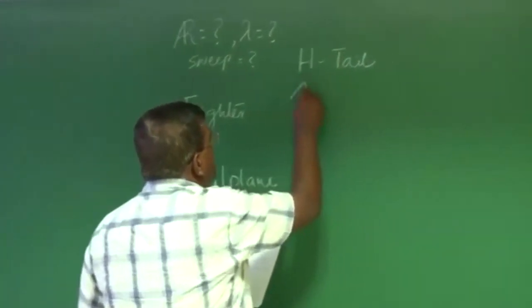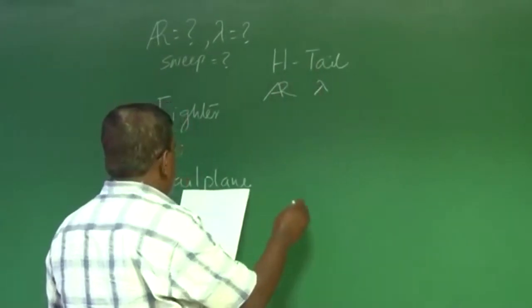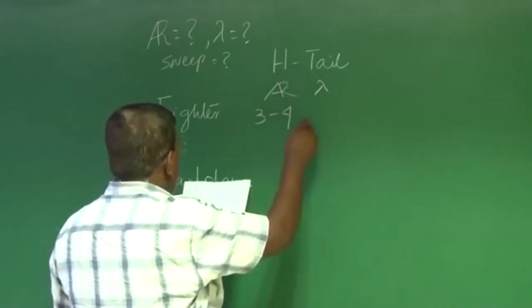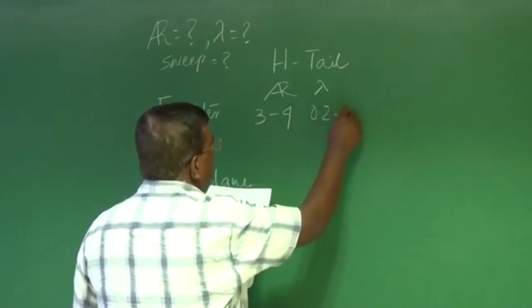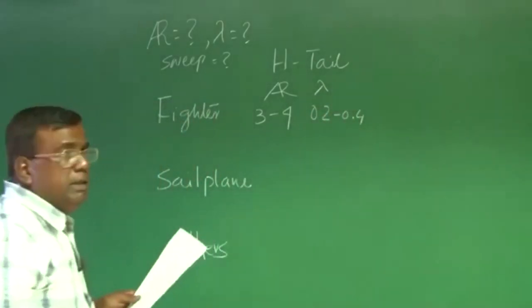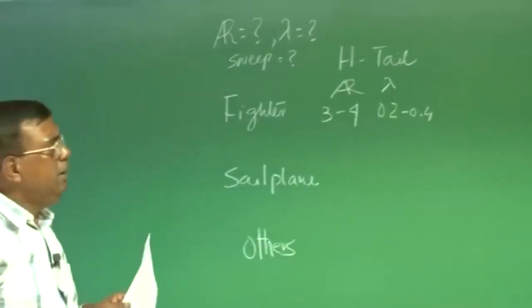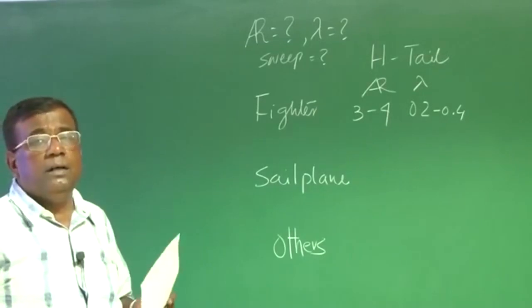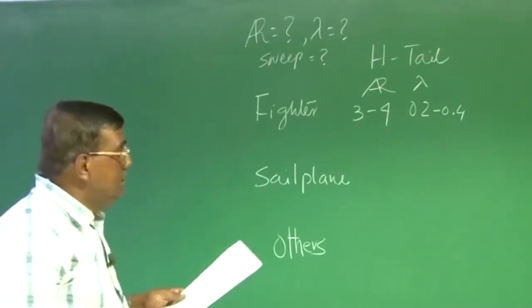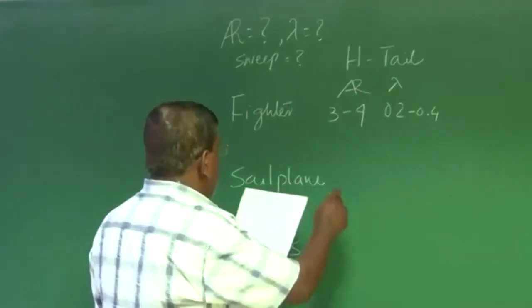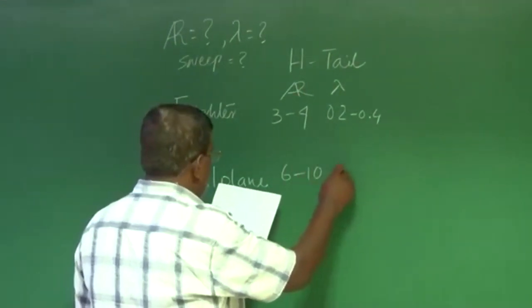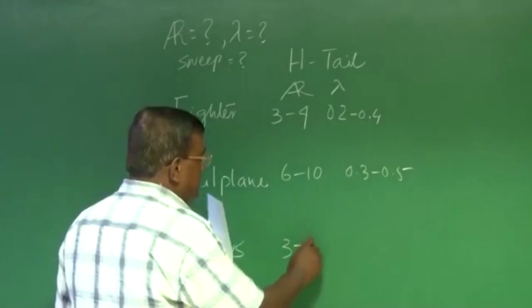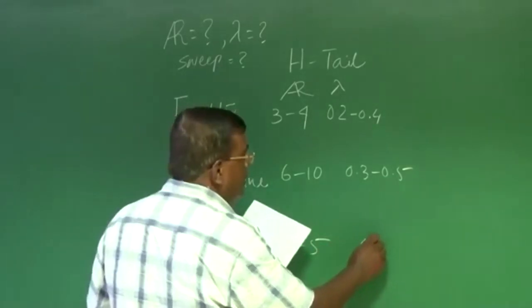So that is why I give some numbers from Raymer. Typically, if I write aspect ratio and taper ratio for a fighter horizontal tail, it is 3 to 4 and 0.2 to 0.4. For a sailplane, it is 6 to 10 and 0.3 to 0.5, and for others it varies between 3 to 5 and 0.3 to 0.6. These are guideline numbers based on different types of aircraft in the market.